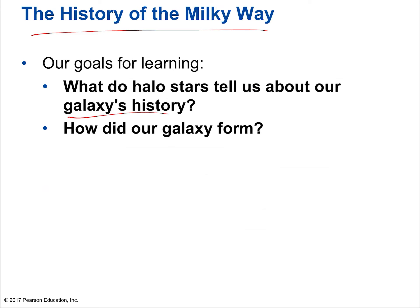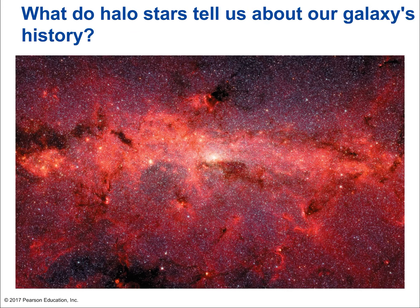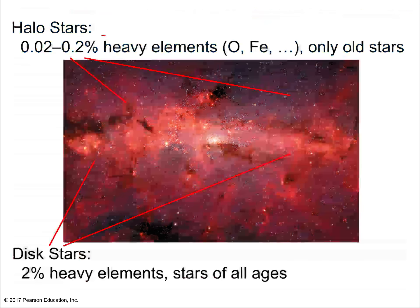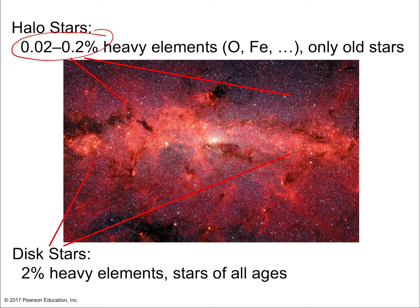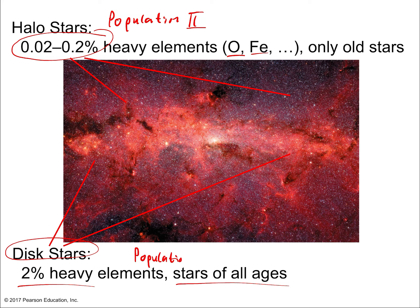Let's talk about the history of our home galaxy, the Milky Way. Halo stars have a very low abundance of heavy elements — very little oxygen, very little iron. Stars in the disk have a full 2% heavy elements and include stars of all ages. These different populations are sometimes called Population I (disk stars) and Population II (halo stars) — the name is misleading since Population II stars are actually older; the terminology dates to the 1940s.